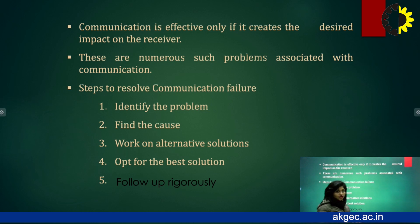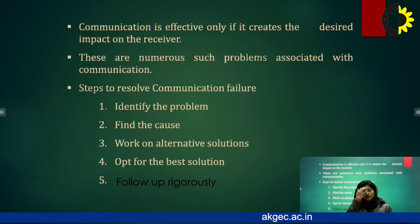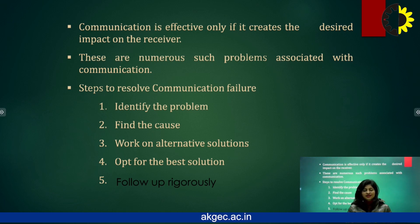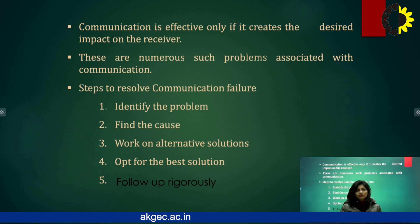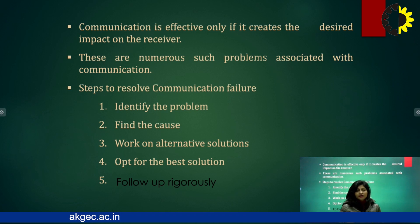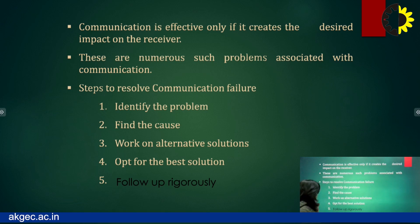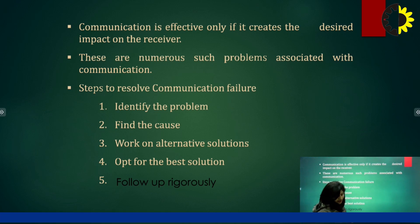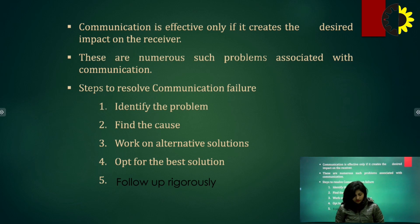Now you need to find solutions. Work on various solutions and choose the best one. In this situation, you can use either 'twice in a month' or 'fortnightly.' Make sure that when choosing a solution, it does not create another problem. Once you have chosen the right solution, opt for the best one and follow up rigorously to make sure the problem never crops up again. These are the ways to solve your communication failure problem.